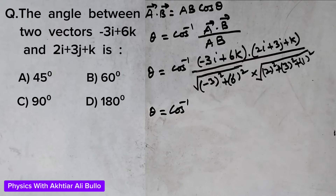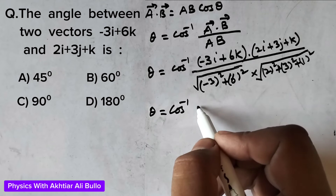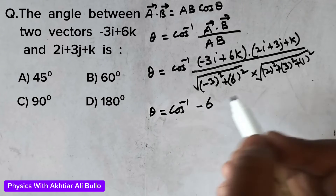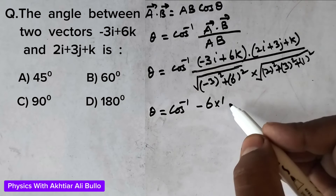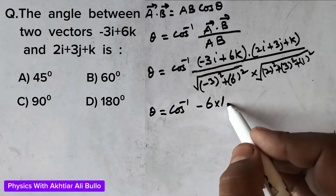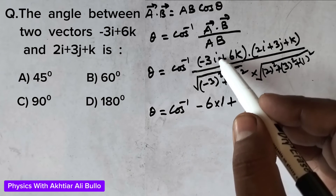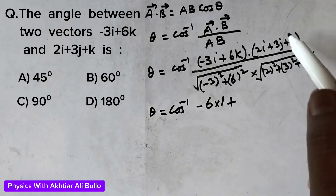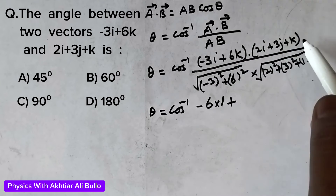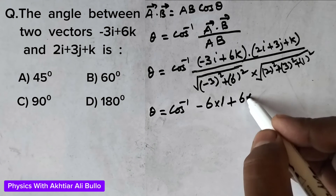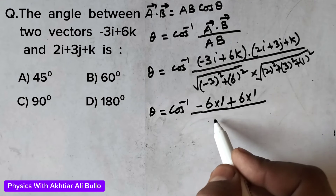We multiply the same unit vectors: minus 3i dot 2i gives minus 6, since i dot i equals 1. The j component is not present in vector a, so it contributes 0. Then 6k dot k gives 6, since k dot k equals 1. This is all divided by under root...